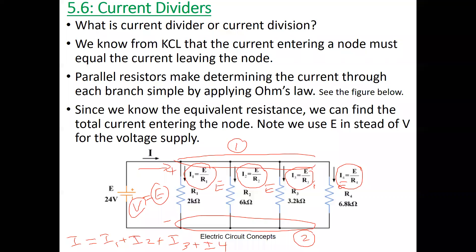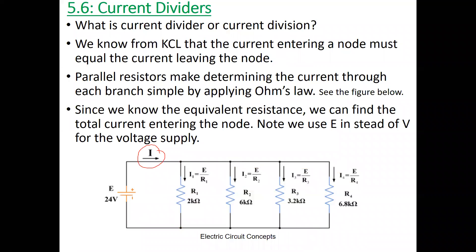So what is current division? Current divider means that I — the total current coming out from the power supply — is going to be divided among the four resistors. We need to find a formula to determine I1, I2, I3, and I4 using IT, the total current. This is what we mean by current division.